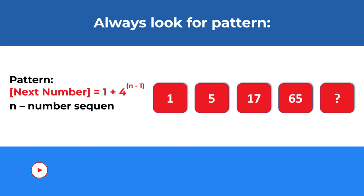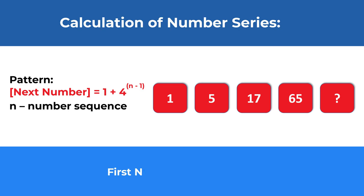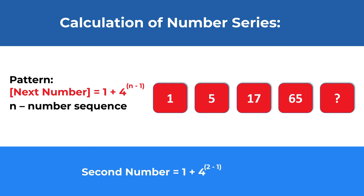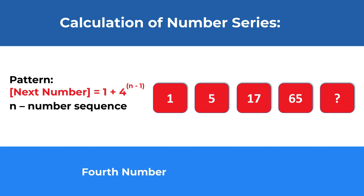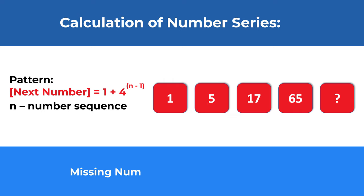Here is the number sequence. The first number is calculated as 1 plus 4 to the power of 0, which is 1. The second number is calculated as 1 plus 4 to the power of (2 minus 1), which is an equivalent of 1 plus 4 and equals 5. The third number is calculated as 1 plus 4 to the power of (3 minus 1), which is 1 plus 4 squared, which is 16, which equals 17. The fourth number is calculated as 1 plus 4 to the power of (4 minus 1), which equals 1 plus 64 and equals 65.